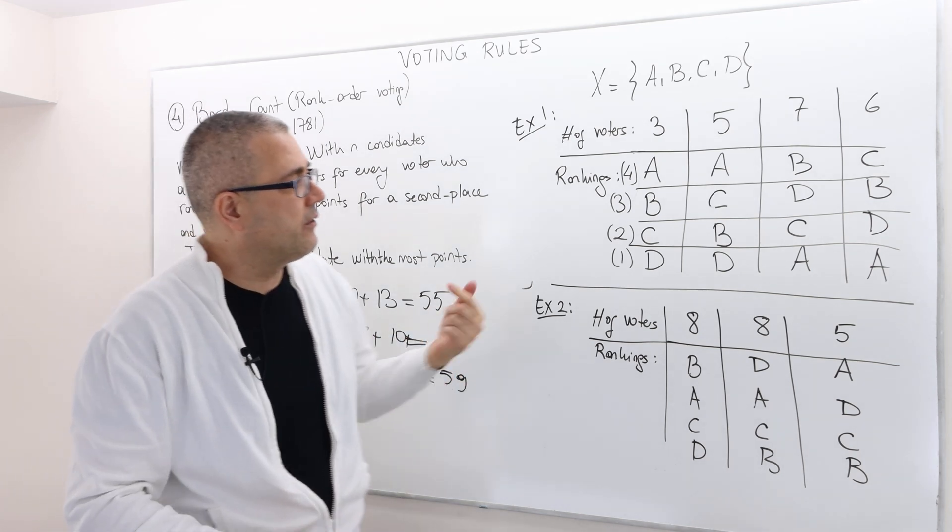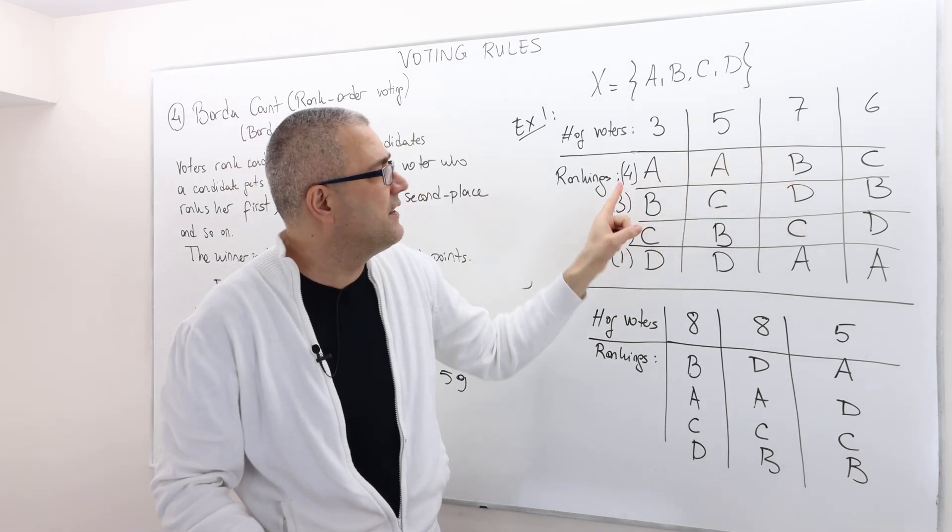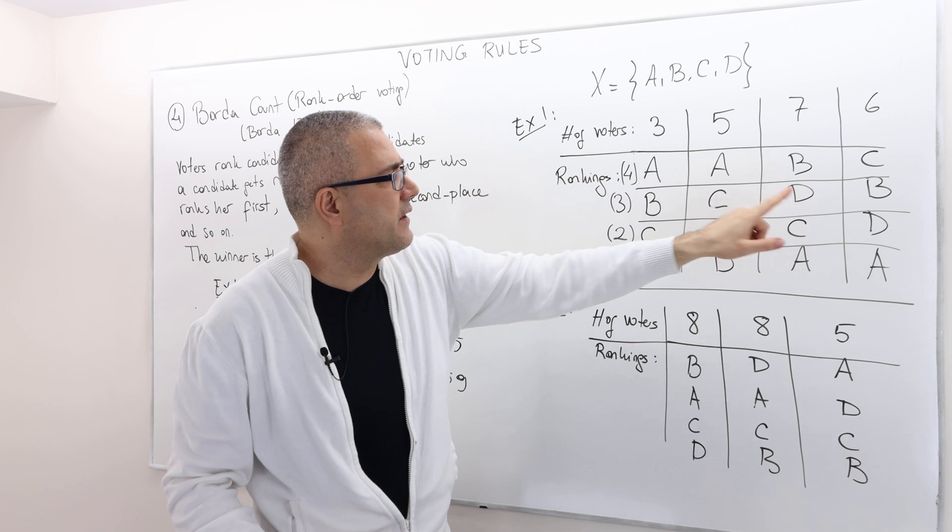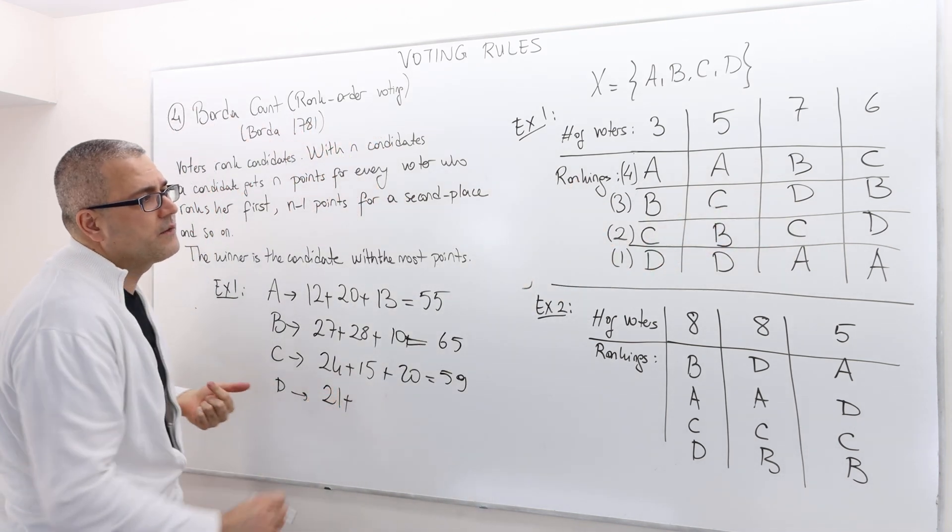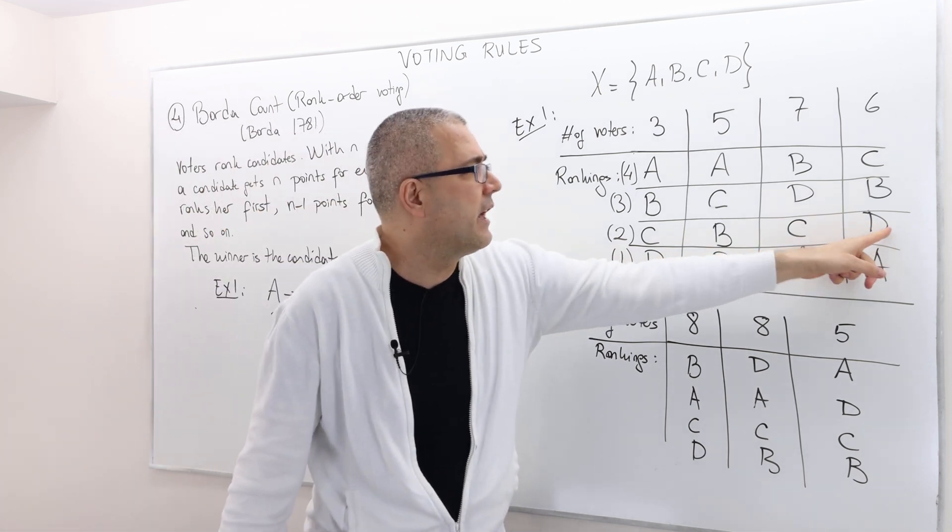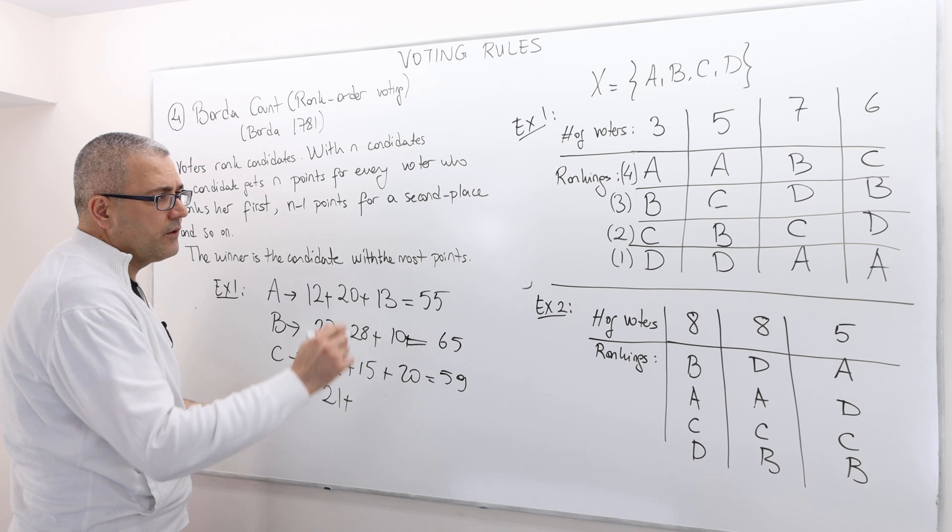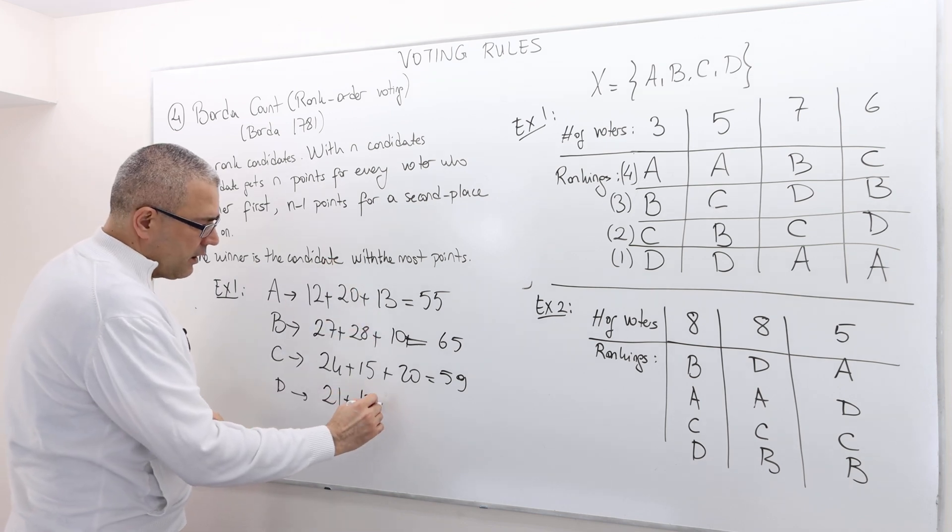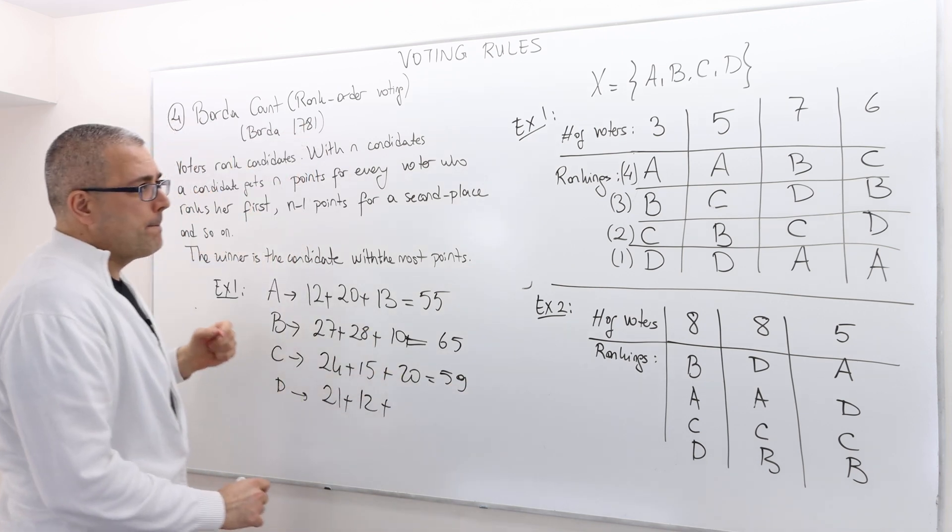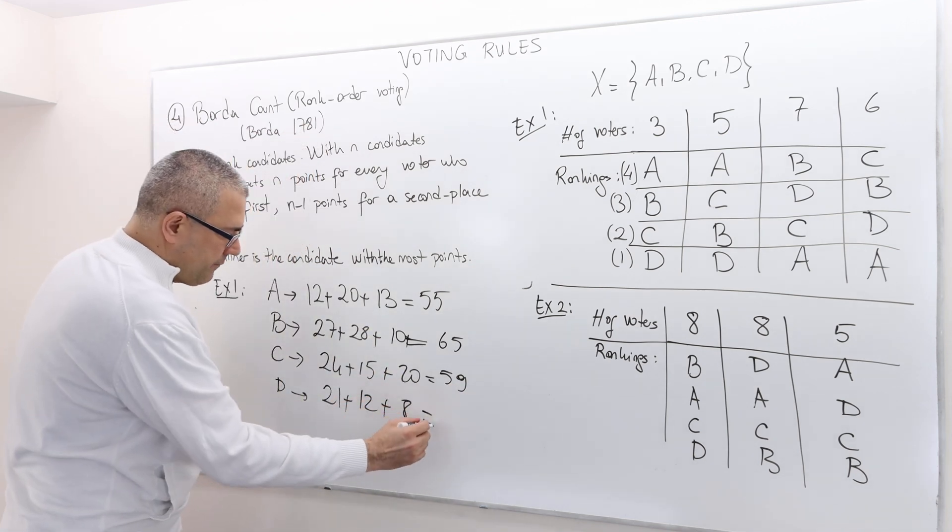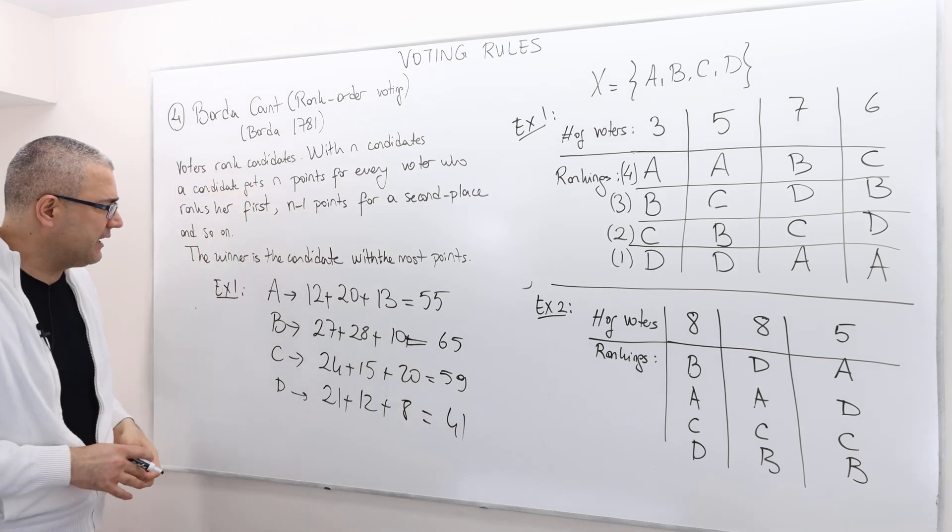What about D? I don't think it's going to cut because D is never a first best. It is the second best for seven people, so three times seven, 21 points there. And then six people put him the third best, so it's two times six, 12. And then finally eight people rank him last, so eight times one. So I have 20, 41. So that's it.